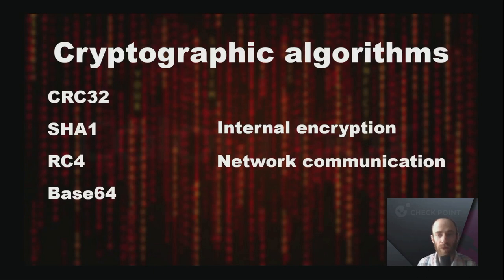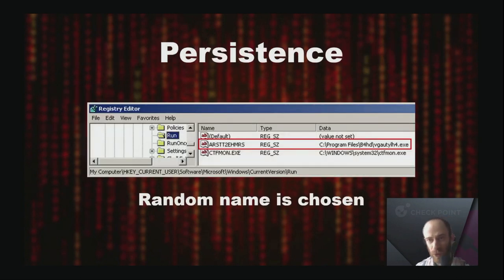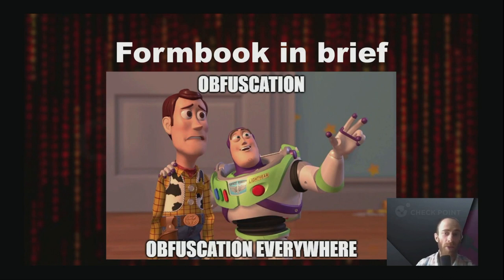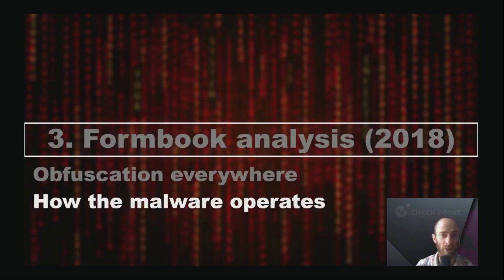We discovered quite a few cryptographic algorithms inside, used both for internal encryption and network communication. For persistence, Formbook creates a random directory with a random executable name. The malware uses a random directory with random file names to store stolen data, which will later be sent to the server. In brief, Formbook can be described in just two words: obfuscation everywhere. Still, we needed to analyze this piece of malware, and despite all the obstacles, we managed to do so with the help of dedicated tools and patience.